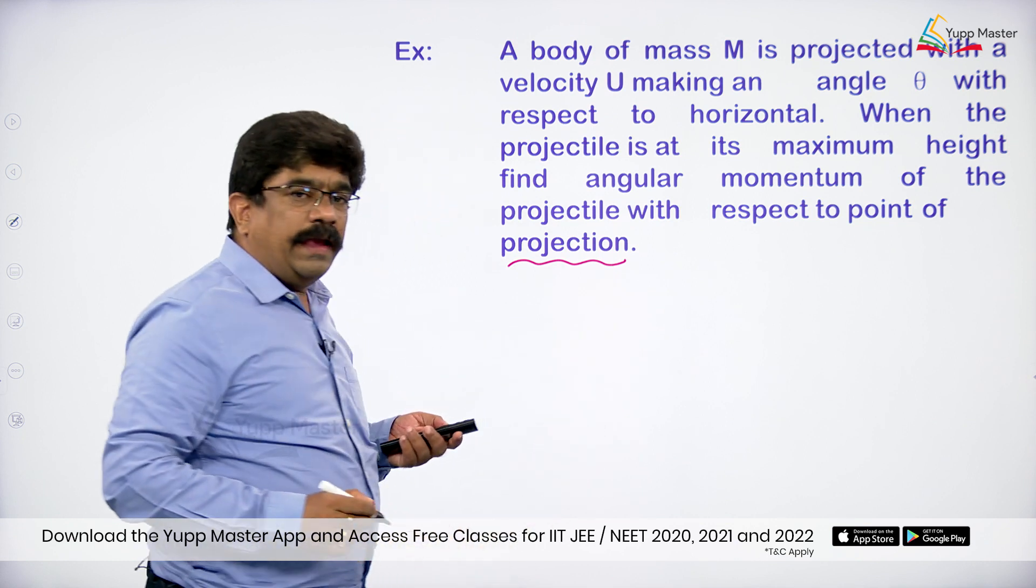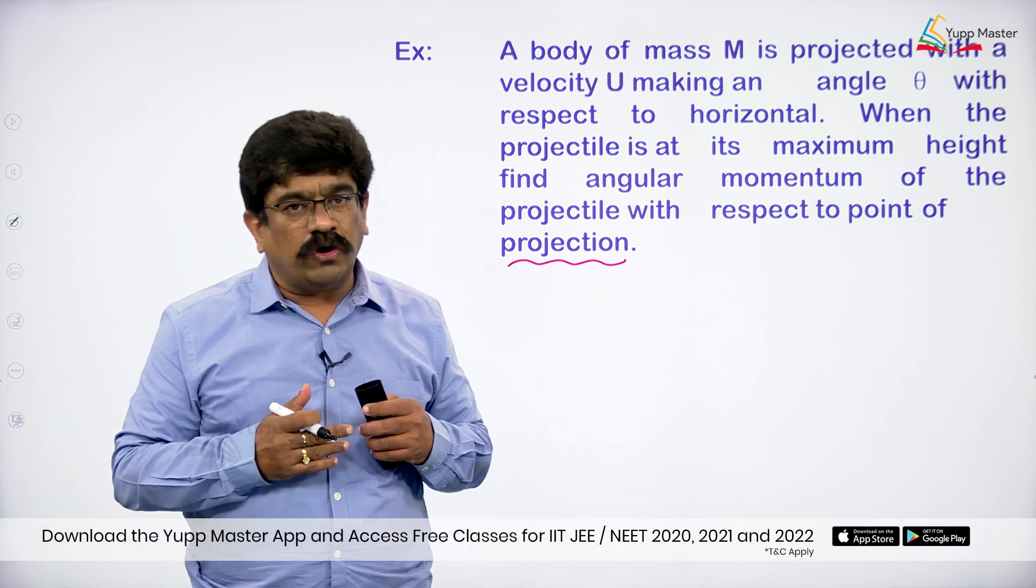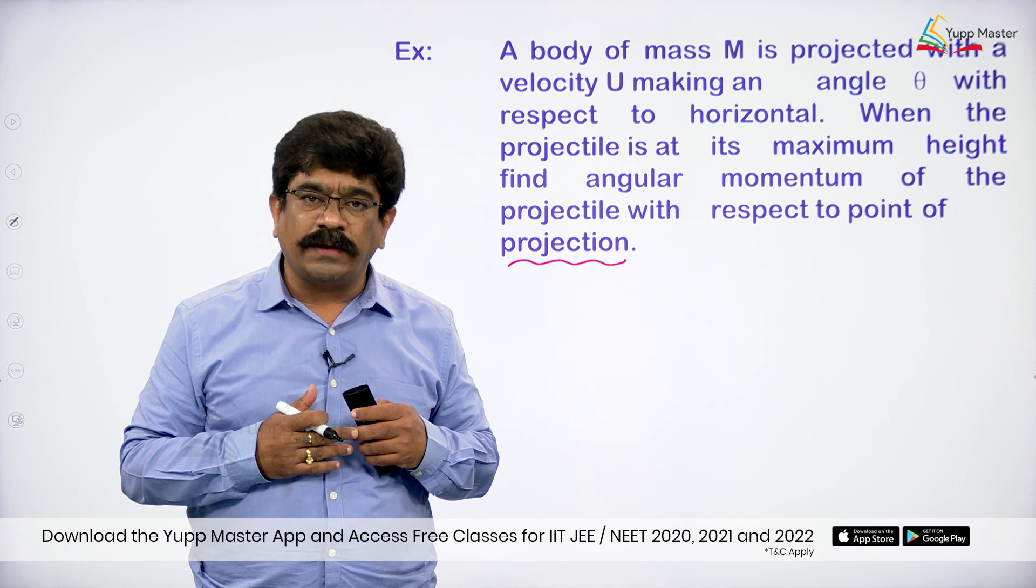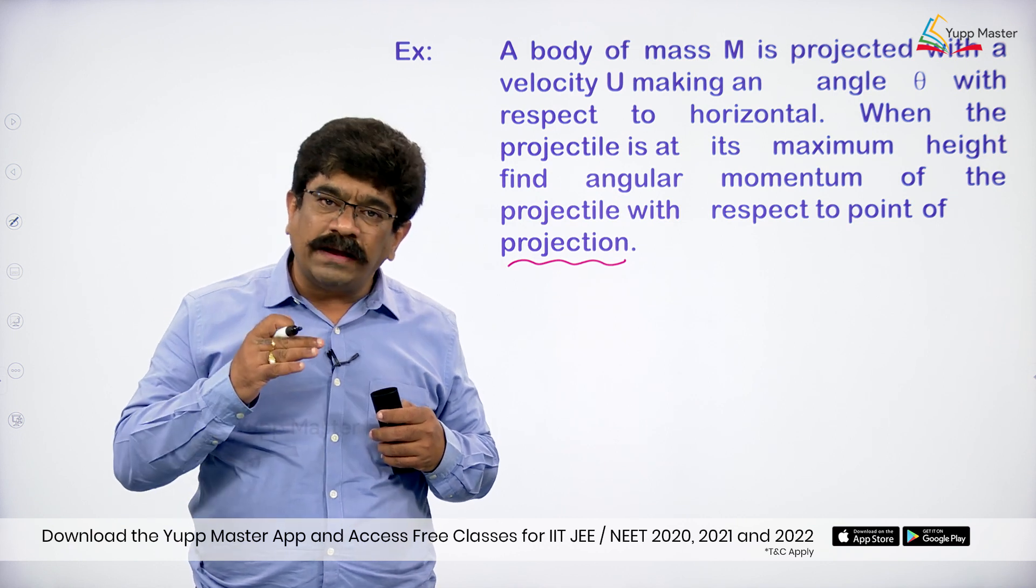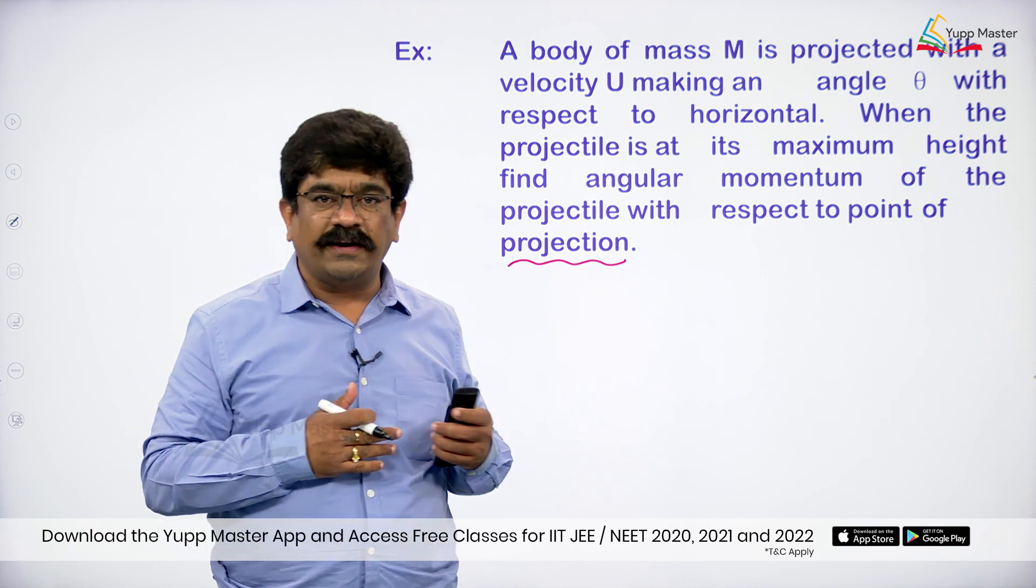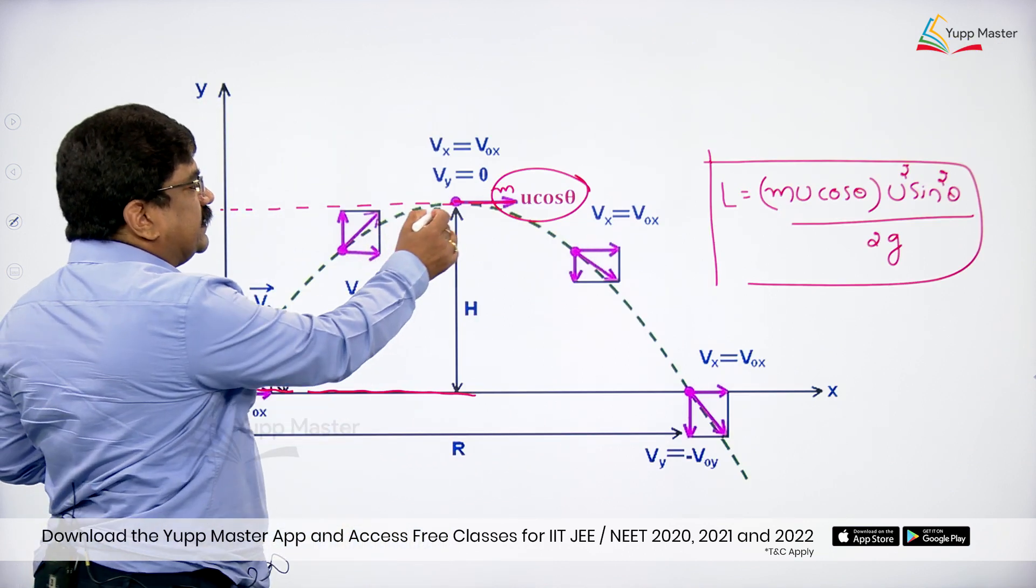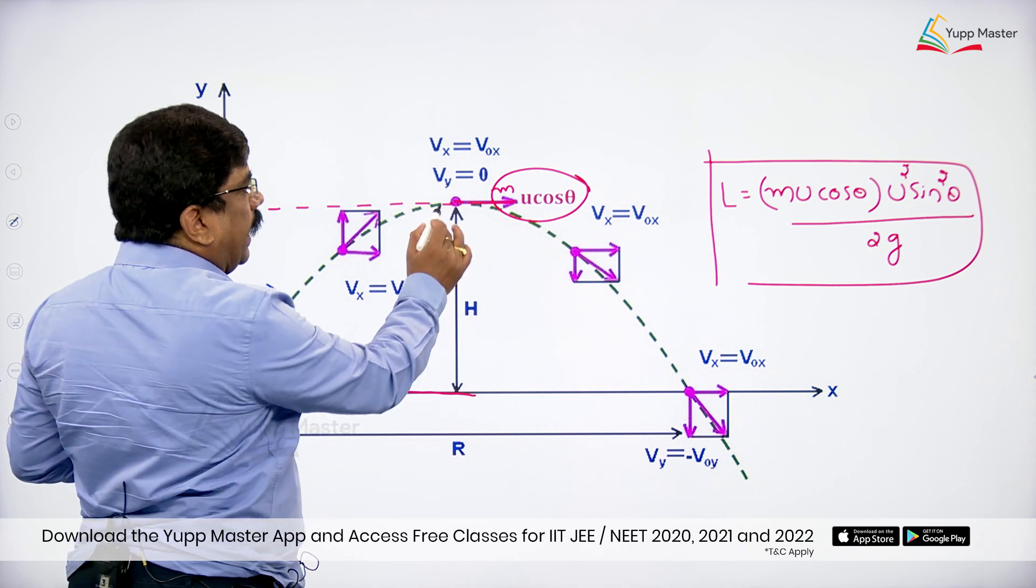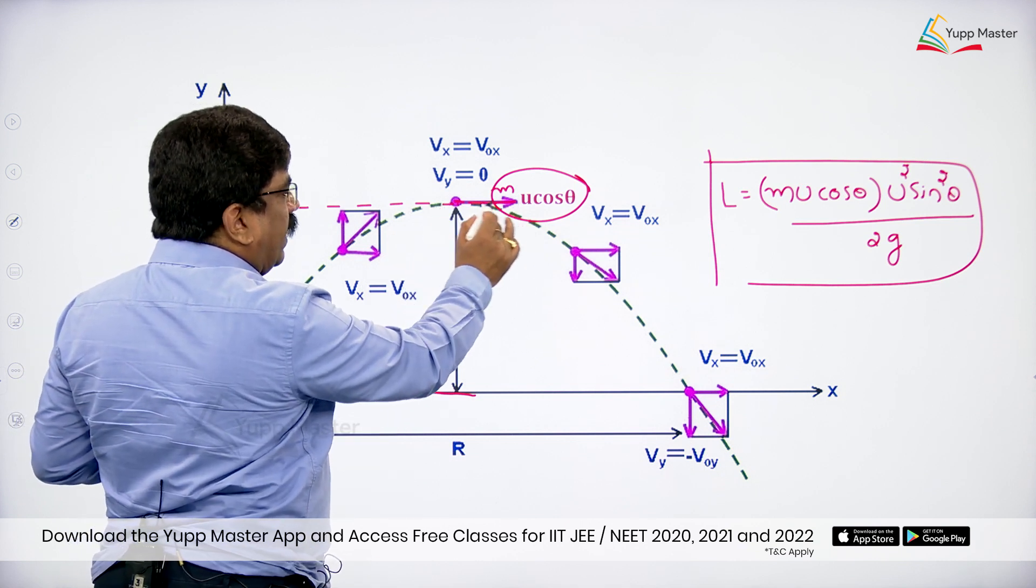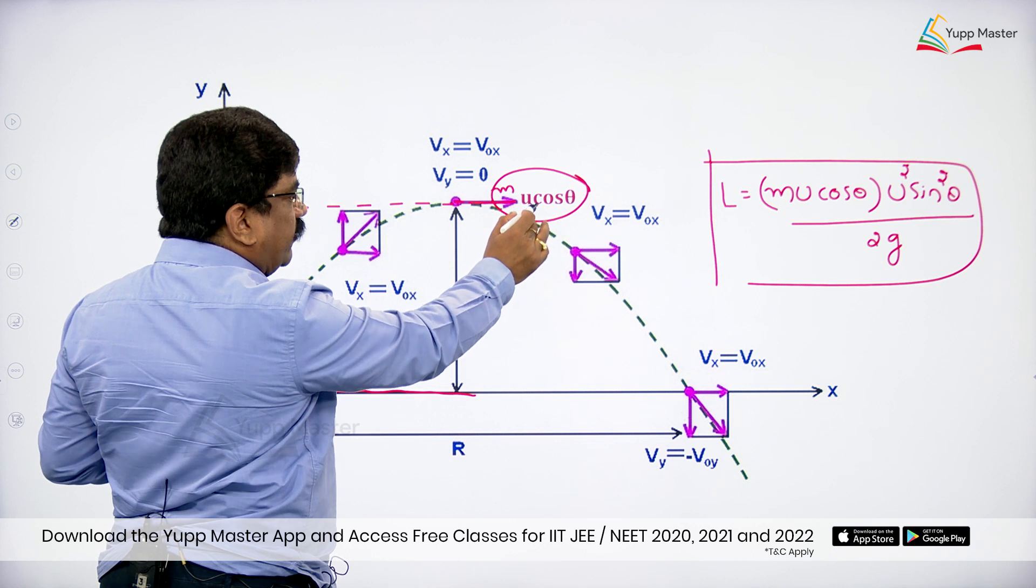Angular momentum is also called moment of momentum, means momentum multiplied by perpendicular distance. If you take this projectile, this is the maximum height. At the maximum height, the velocity is horizontal, that is u cos theta.